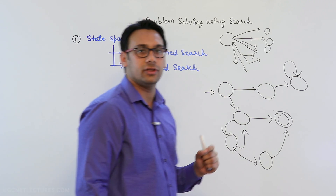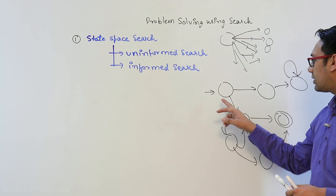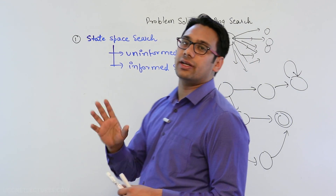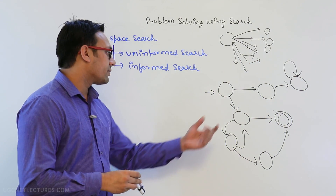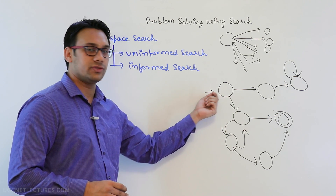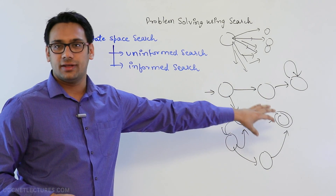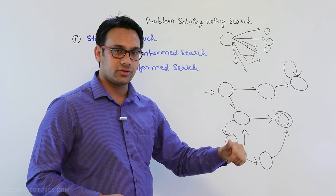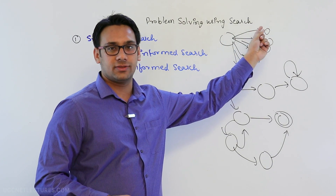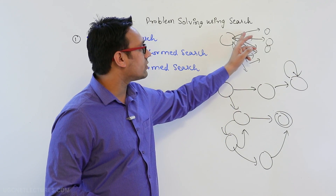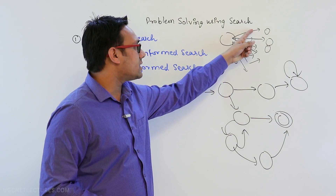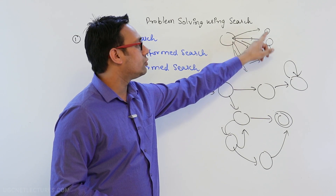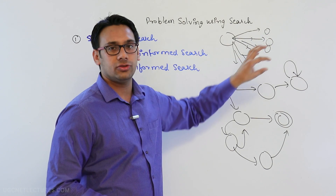Our aim is to go from a starting state to a goal state. If we are able to reach the goal state, we have found the solution to that particular problem. In state space search, there are multiple paths of solution, but some lead to an undefined state that never reaches the final goal, while others lead directly to the final state.